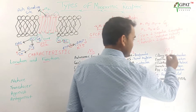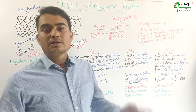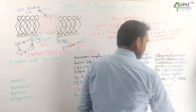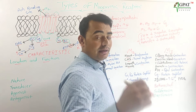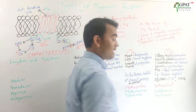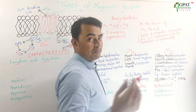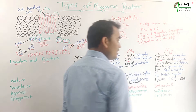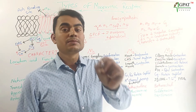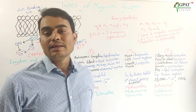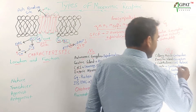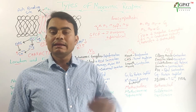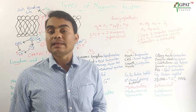M3 receptors are mainly located on visceral smooth muscles, the eye, and the exocrine glands. In the ciliary muscles, M3 receptors are located and cause contraction, leading to pupil constriction. In the exocrine glands, M3 receptors cause secretion. M3 receptors are also located on the vascular endothelium of small blood vessels, where they increase nitric oxide (NO) release.